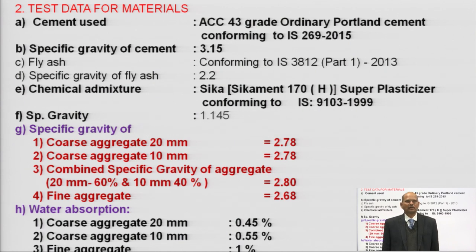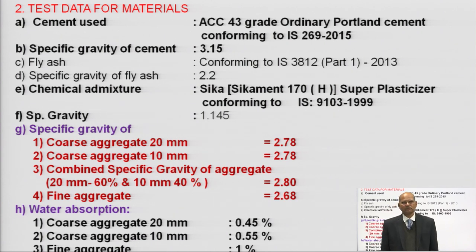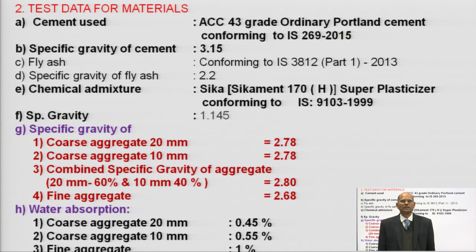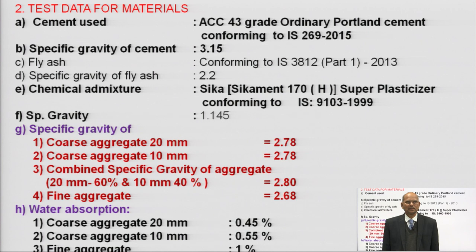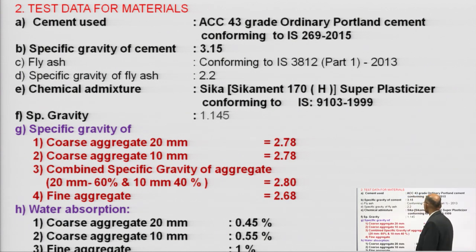Fly ash was also collected and tested as per IS 3812 Part 1:2013. The specific gravity of fly ash was calculated as 2.2 by experiment. For the chemical admixture, I selected Cika Made 170 — different brand name admixtures are available commercially — and this conforms to IS 2103:1999. For aggregates, the specific gravity of coarse aggregate (both 20 mm to 10 mm and 10 mm to 4.75 mm ranges) is 2.78, as the source is the same. The combined specific gravity is 2.78 (20 mm is 60% and 10 mm downside is 40%). Fine aggregate specific gravity is 2.68.